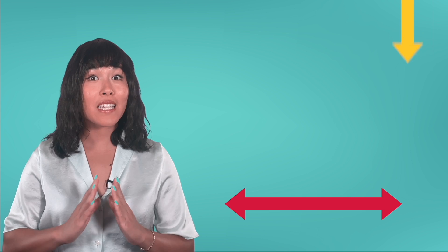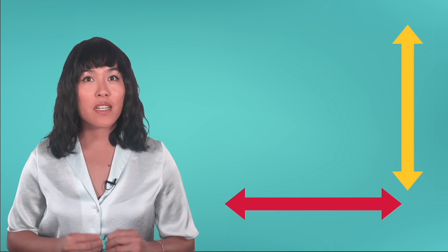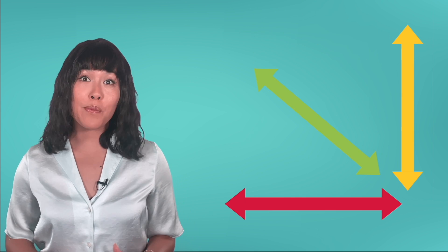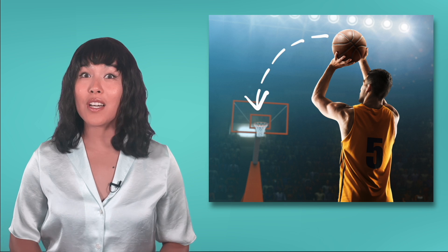So far, we've looked at the case of launching a projectile vertically and horizontally, but most projectiles are launched somewhere in between. For example, when this basketball player shoots his free throw, he's going to aim the ball at an upward angle, but not straight up. Projectiles launched at an angle have both vertical and horizontal launch velocities.